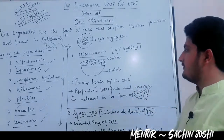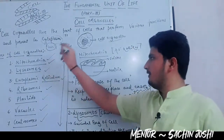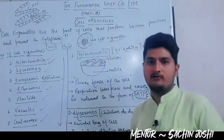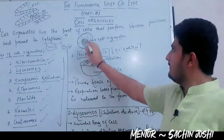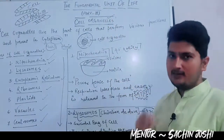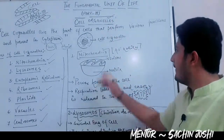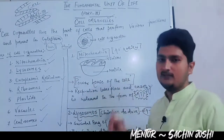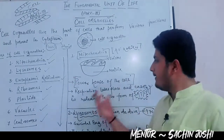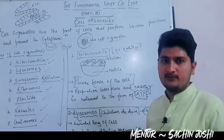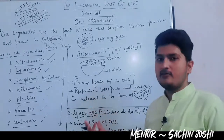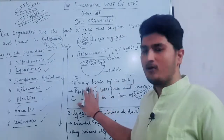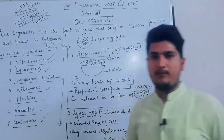Let us start with the first cell organelle, that is mitochondria. Mitochondria is a type of cell organelle which is present in the cytoplasm, and mitochondria is popularly known as the powerhouse of the cell. Mitochondria is called the powerhouse of the cell because it is responsible for releasing energy in human beings.